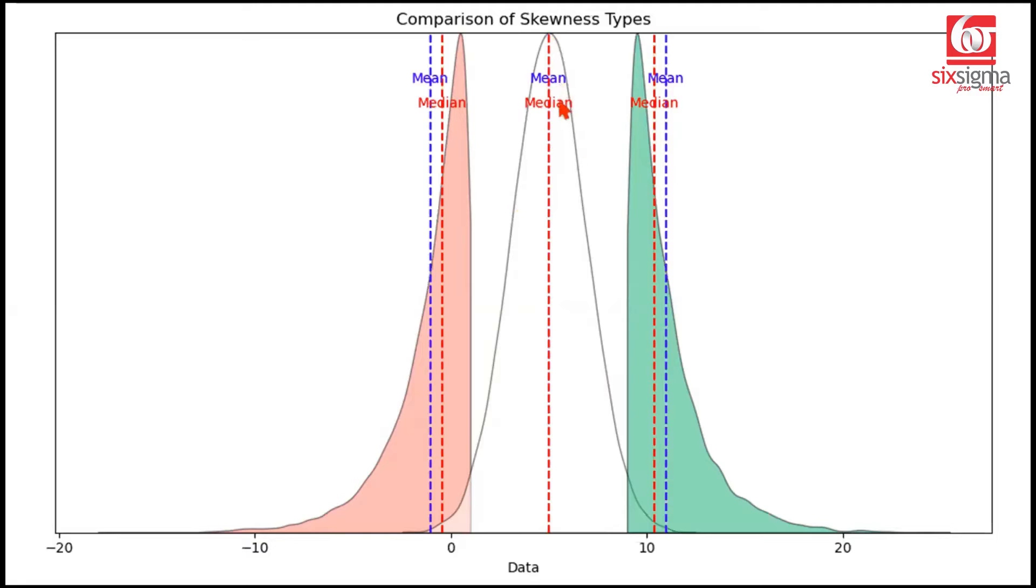What happens to these central tendencies in case of a right skew? Well, the peak remains where it was. So the mode is not affected. Median, because it has to divide the data into two halves, would shift to the right of the mode. And mean, because it is directly affected by the magnitude of the values, which will go further to the right.